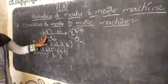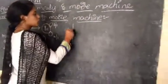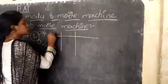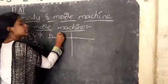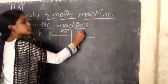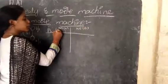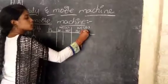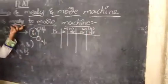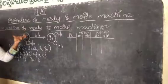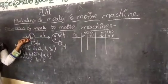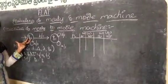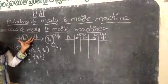We will draw the transition table for Mealy machine. The Mealy machine transition table has: present state, next state on input A, next state on input B, input symbol, and output symbol — because in Mealy machine, the output depends on both the input and the current state.